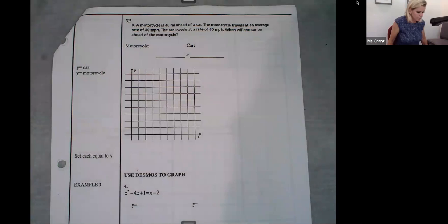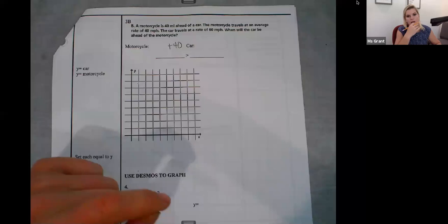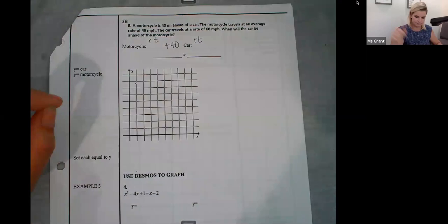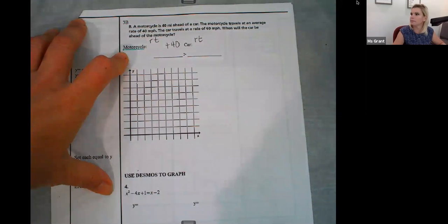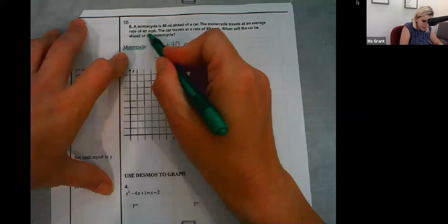So what I need to do is the first thing is that the motorcycle has a head start. Since the motorcycle has a head start, I'm going to put a plus 40 with the motorcycle because it's already ahead. But now I need to know what's the rate and the time of the motorcycle, and what's the rate and the time of the car. So that's where making the equation comes in. So the motorcycle, how fast is the motorcycle going? And what do I put for time then?